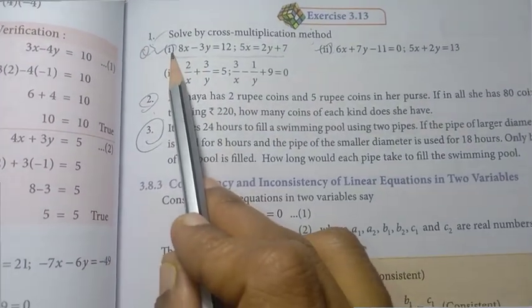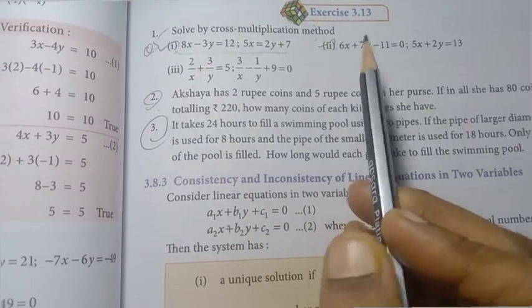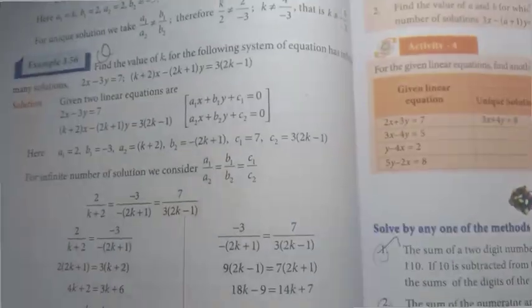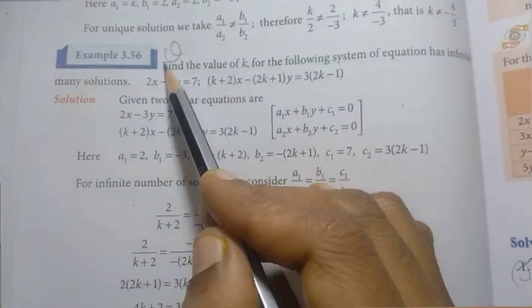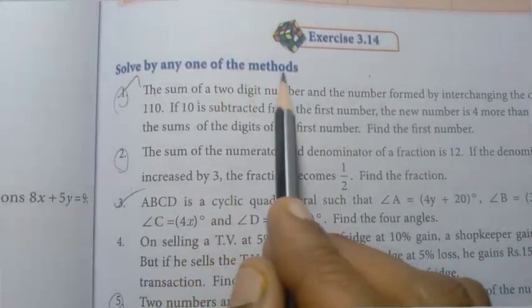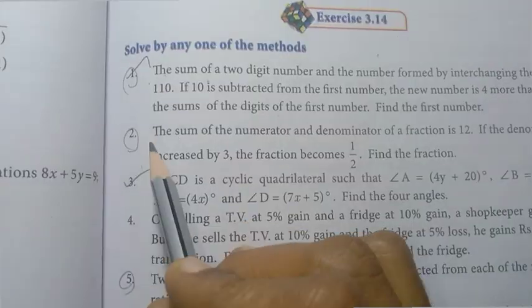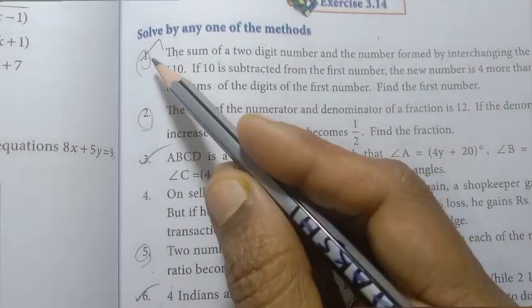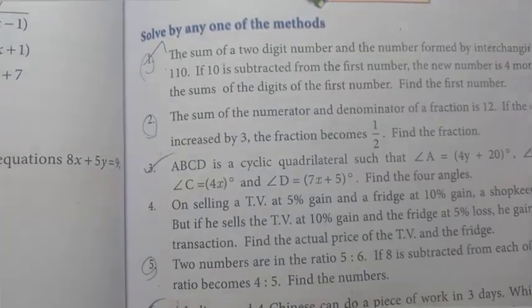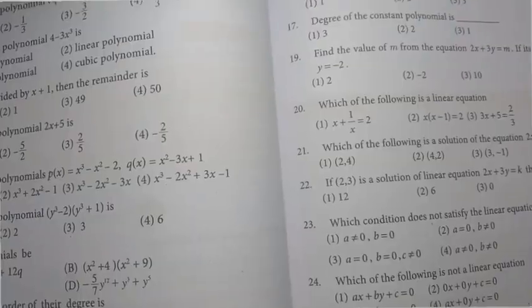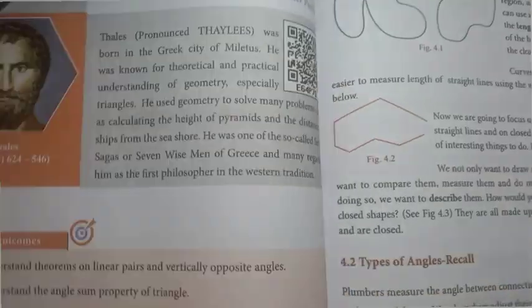In exercise 3.13, the 1st sum is a 5-mark question; the 2nd and 3rd are important. Example 3.54 and example 3.56 are important. Moving to exercise 3.14 — solve by any one of the methods — the 1st, 2nd, 3rd, 5th, and 6th are important. Exercise 3.15 — check the marks and review accordingly.